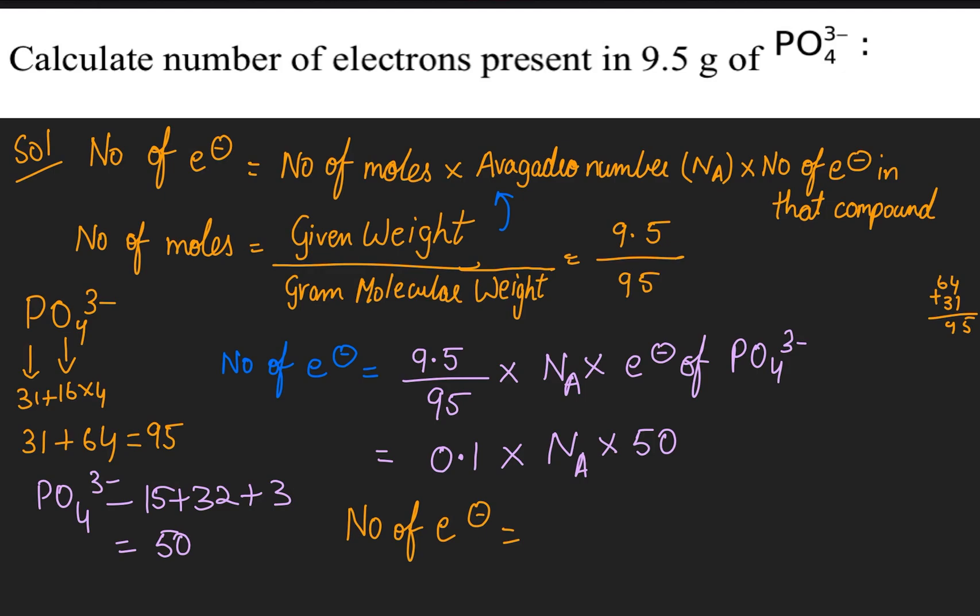Now number of electrons equals 5 times Avogadro's number. We substitute Avogadro's number: 5 times 6.023 times 10²³ electrons.